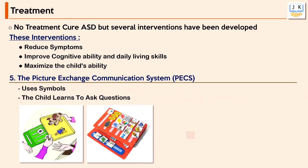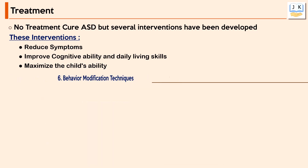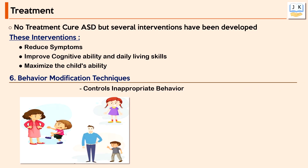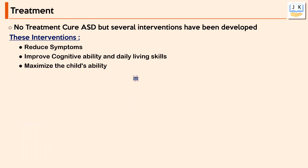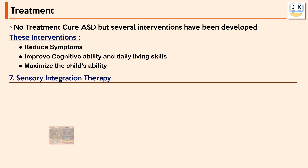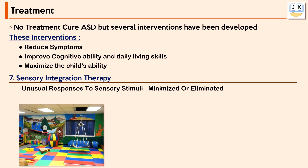With PECS, the child learns to ask questions and communicate through special symbols. Behavior modification technique is one of the most effective techniques in controlling inappropriate behavior in children with autism. Sensory integration therapy is an important treatment in which unusual responses to sensory stimuli can be minimized or eliminated to a certain degree, enabling children to cope with hypo- or hypersensitivity issues.